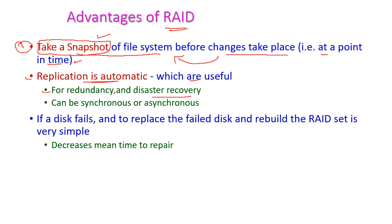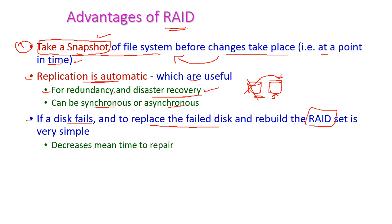If the data fails, we can immediately recover it using replication. Replication can be either synchronous or asynchronous. Synchronous means write operations take place simultaneously on both discs. Asynchronous means the backup is taken after some time. If any one disc fails, replace the failed disc and rebuild the complete RAID set — this is very simple.